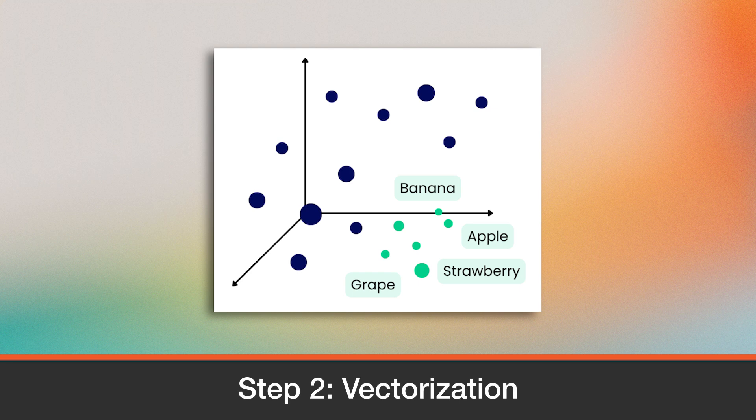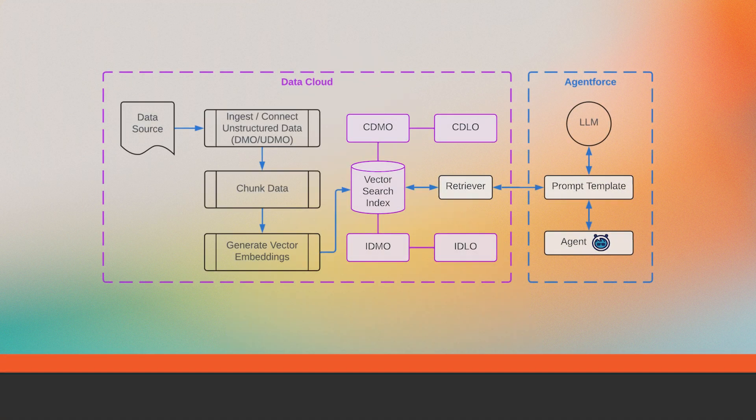Once chunked, each segment is transformed into a vector embedding, which is a dense array of floating-point numbers that captures the semantic meaning of the text. Chunks with a similar meaning are placed closer together in the vector space, enabling highly accurate semantic matching.